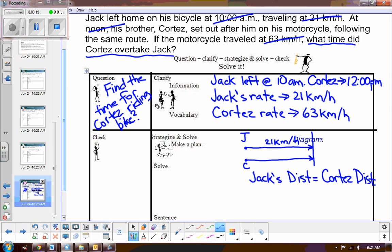Okay, so let's take Jack's distance. We know distance is rate times time. So what's Jack's rate? Well, it's 21 kilometers per hour. Great. Do we know the time of Jack? Well, all we know is that he left at 10 o'clock, and then Cortez left at 12. So we're going to have to figure that out. That's an unknown.